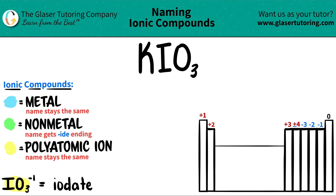IO₃, which is always a negative one charge — you should know the charge as well — is always called iodate. So the whole IO₃ is the polyatomic.